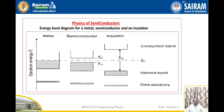Let us look at the physics of semiconductors. Energy level diagrams for metals, semiconductors, and insulators are considered. For metals, electrons already exist in the conduction band. In case of semiconductors, there is a narrow gap between the valence band and conduction band. In case of insulators, there is a large energy gap between the valence band and conduction band.